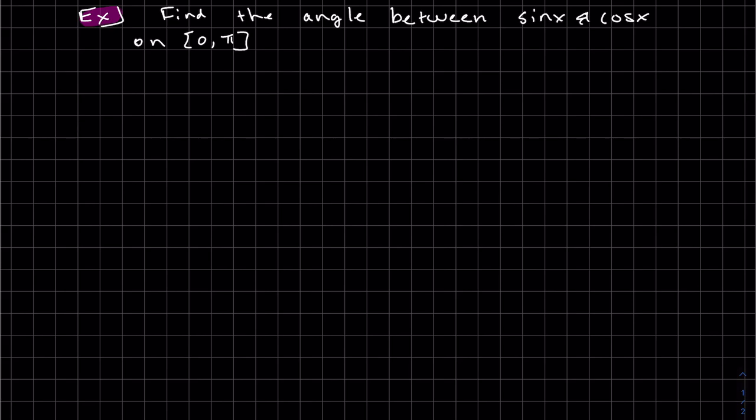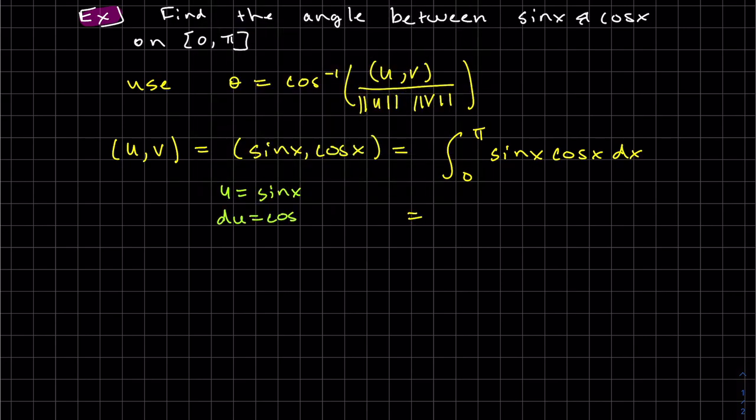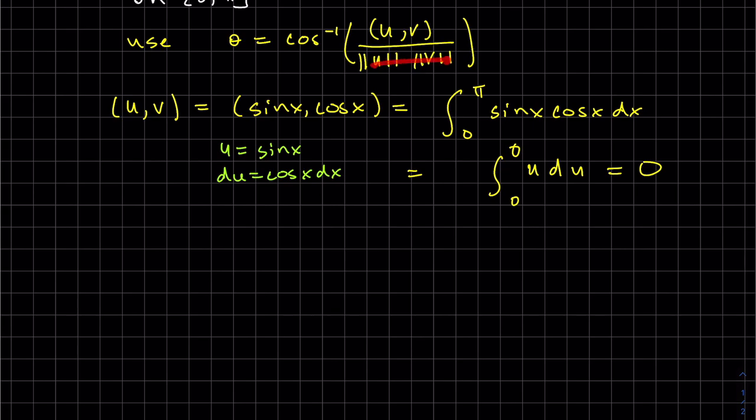We're going to find the angle between sine of x and cosine of x on [0, π]. So we're going to use the above angle formula using the inner product. Let's go ahead and find the top first. This will be defined from 0 to π, the integral of sin(x)cos(x) dx. When you put in both limits of integration, sin(0) is 0 and sin(π) is 0, so this is going to be 0. Now, I don't need to find the bottom two because the whole ratio will be 0 now.